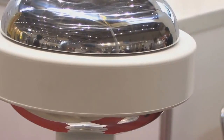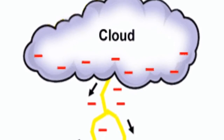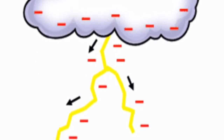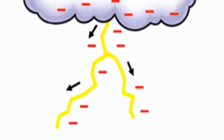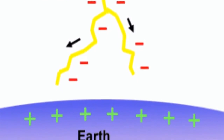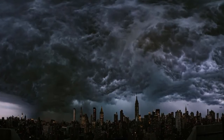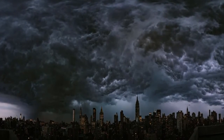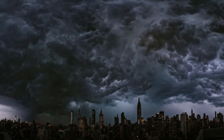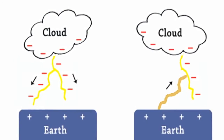As an electrical storm builds, natural phenomena create powerful charges within the storm cloud. With an electrical charge at the base of the cloud, this charge induces a shadow of opposite charge on the surface of the earth beneath it. As this charge grows, it attempts to interact with the ground to balance its load with prominent objects below.